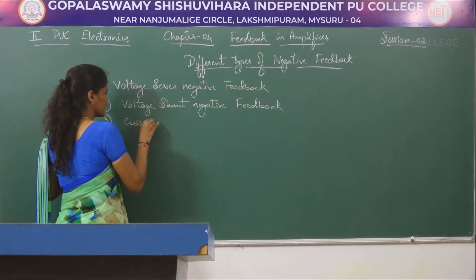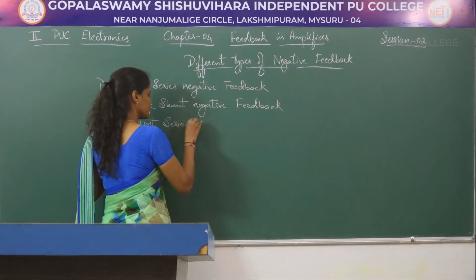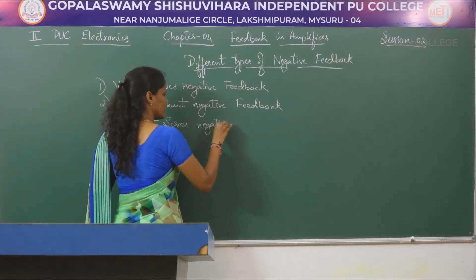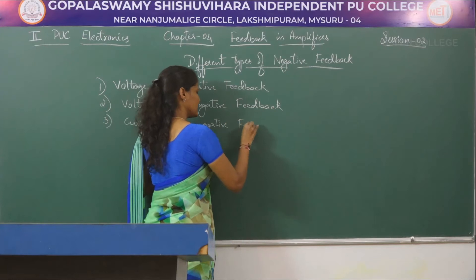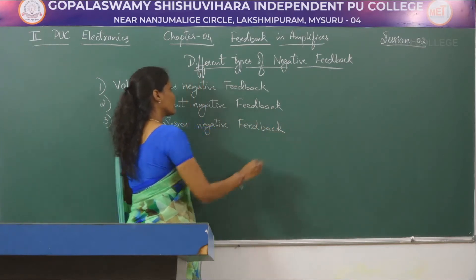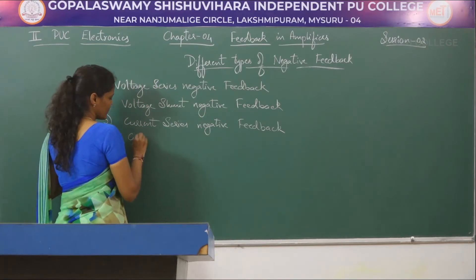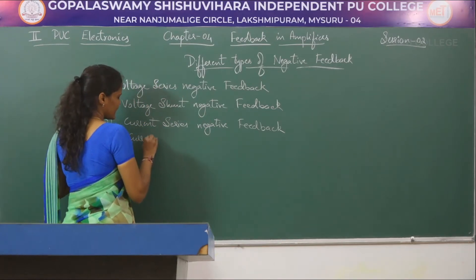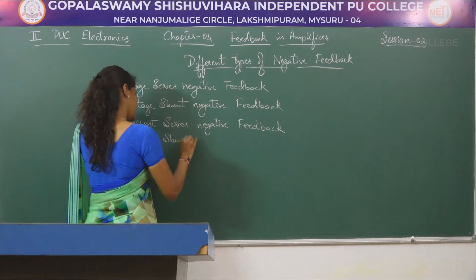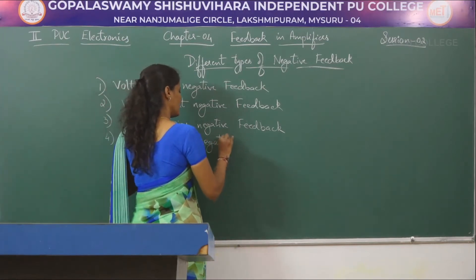The third type is current series negative feedback, and the fourth type of negative feedback is current shunt negative feedback.